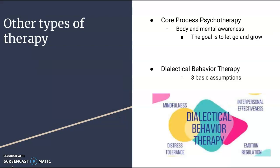There are many types of therapy being used. The most common types were mentioned previously. But there are many other forms. The first unconventional therapy method is core process psychotherapy. This method uses a mindful approach to emphasize awareness of a person's body and helps mentally process self-exploration. Through this process, a person will identify the history behind their problems. The goal is to let go and grow.